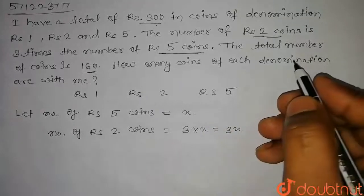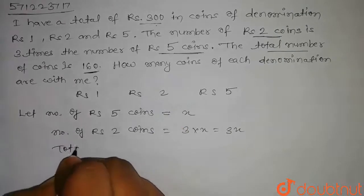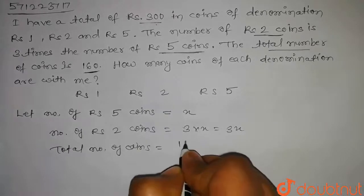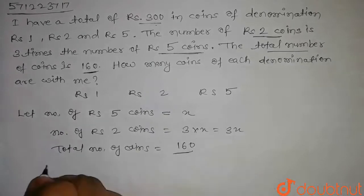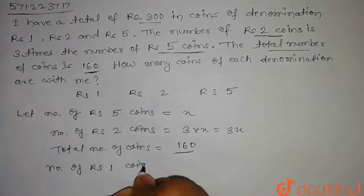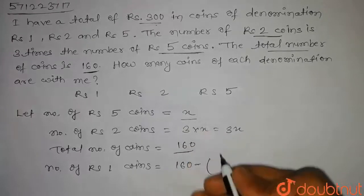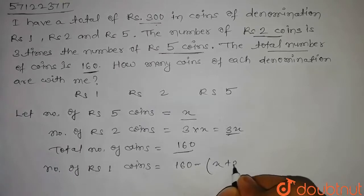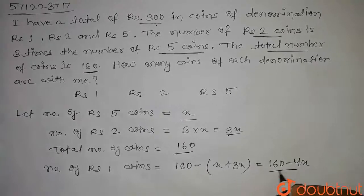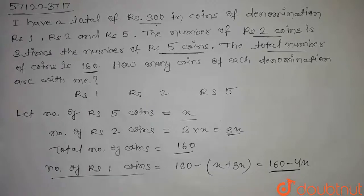It is also given in the question that the total number of coins is 160. So the number of Rs.1 coins will be 160 minus the number of Rs.5 coins plus the number of Rs.2 coins, that is 160 minus 4x. Hence, the number of Rs.1 coins is equal to 160 minus 4x.